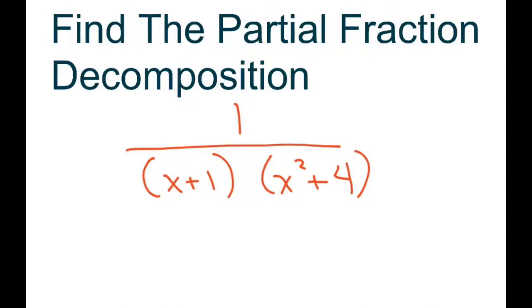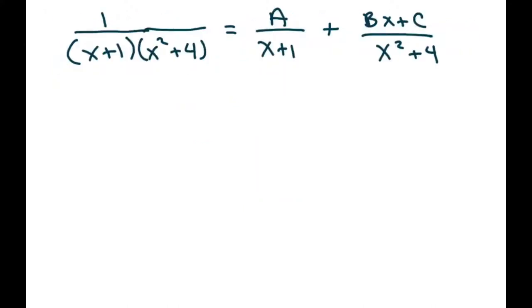x²+4 is nonlinear, so we're going to write A over the linear term. Since we have a quadratic term in the denominator on the second part, we have to write the linear term because we want these to be proper rationals, so we might have a C or a B here.